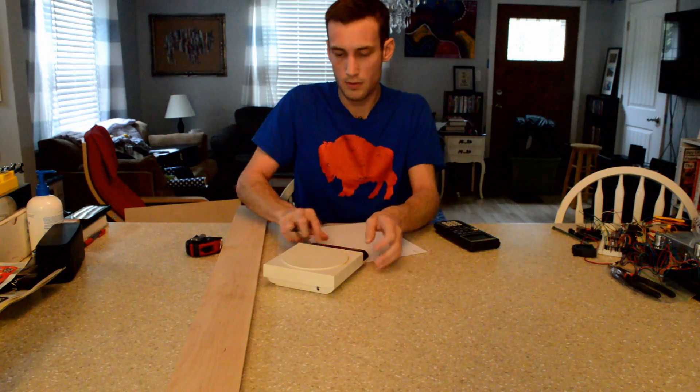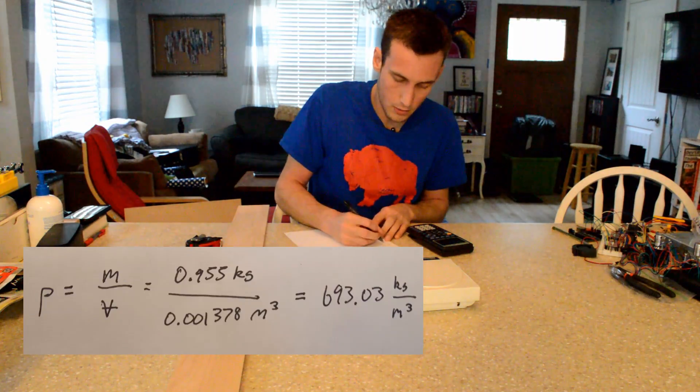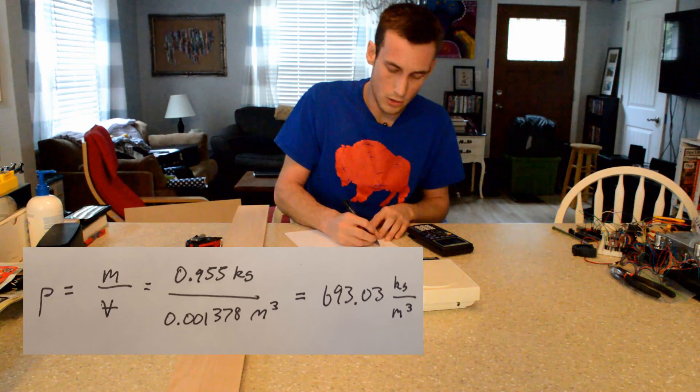And so we can take that off, turn that off. And now the density is simply the mass in kilograms divided by the volume in meters cubed.